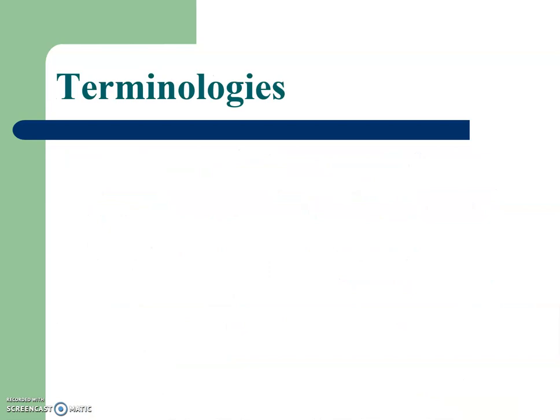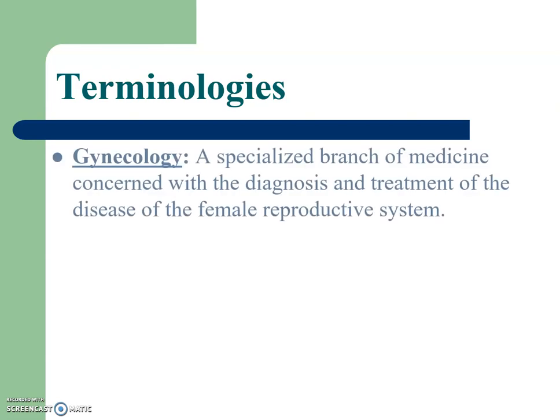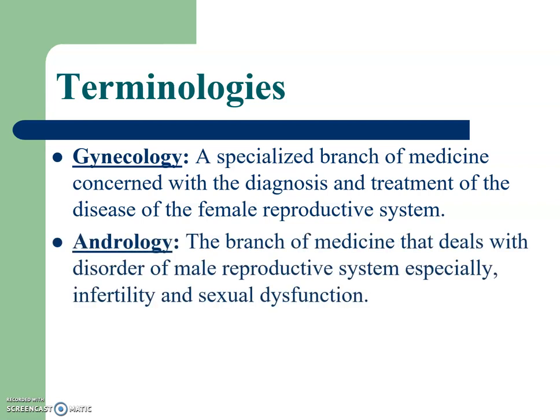Now we will study various terminologies associated with the reproductive system. Gynecology is a specialized branch of medicine concerned with the diagnosis and treatment of diseases related to the female reproductive system. Andrology is the branch of medicine that deals with disorders of the male reproductive system, specially infertility and sexual dysfunction.